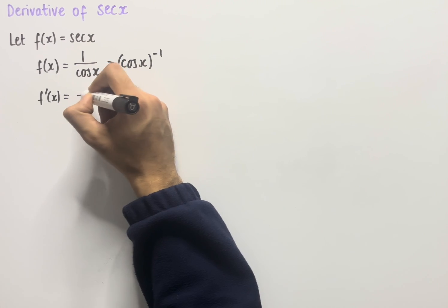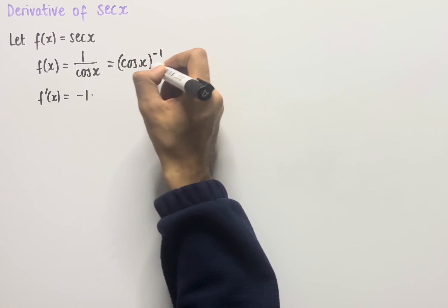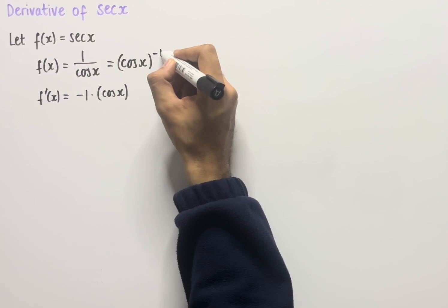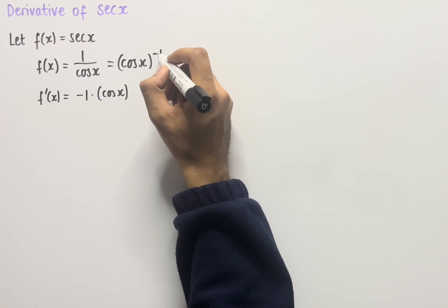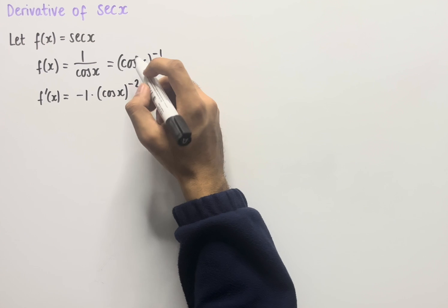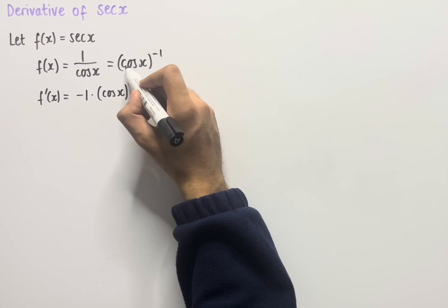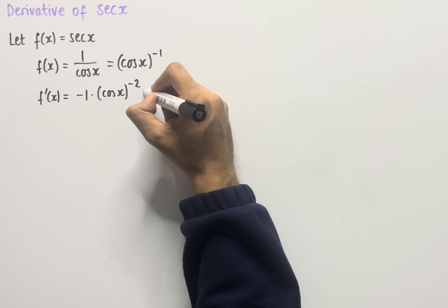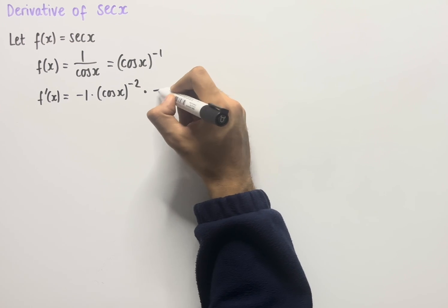We multiply by the power, so that becomes minus 1 times this whole function, cos x, and now we take away 1 from the power, so minus 1 minus 1 becomes minus 2. Then we differentiate the inner function, which in this case is cos x, and cos x differentiates to minus sin x, and then we multiply this with everything we have here.